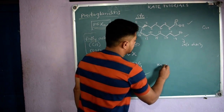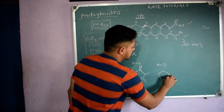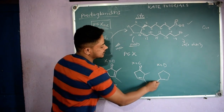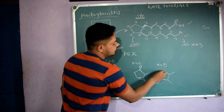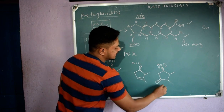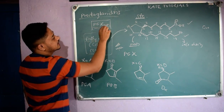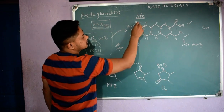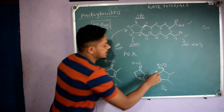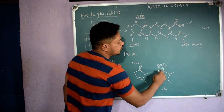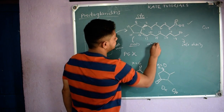When X equals D, the ketone group moves and a C=C double bond is present. In the general formula PGXN alpha, alpha refers to the stereochemistry at C9. If there is an OH group below the plane at C9, it is D alpha. Alpha stands for below the plane and beta stands for above the plane.